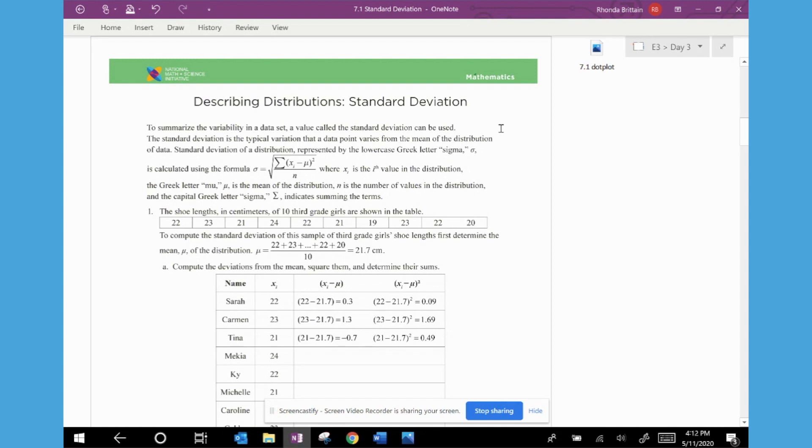So the lesson starts by giving the formula before moving into number one. It says, to summarize the variability in a data set, a value called the standard deviation can be used. The standard deviation is the typical variation that a data value varies from the mean of the distribution of data. Another way to phrase that would be to say that it's the average distance that all of the data values together vary from the mean.